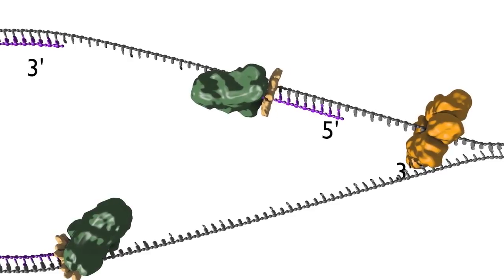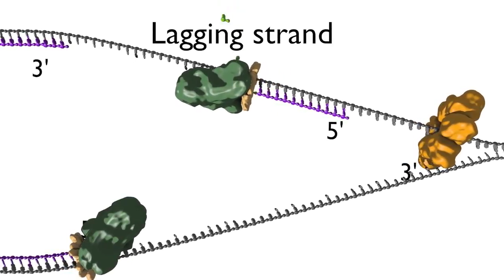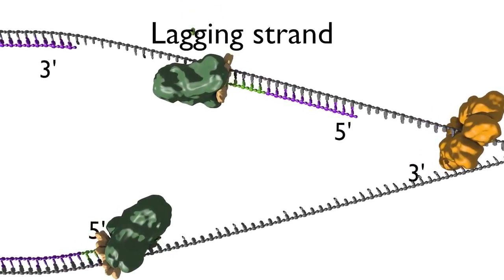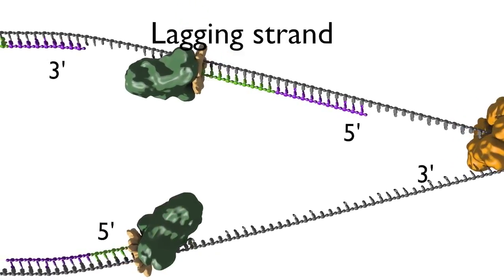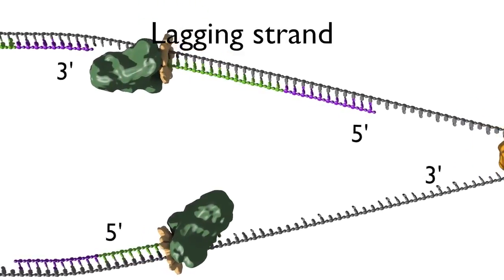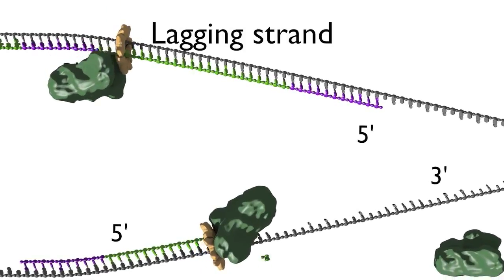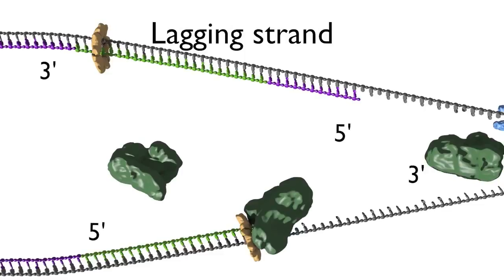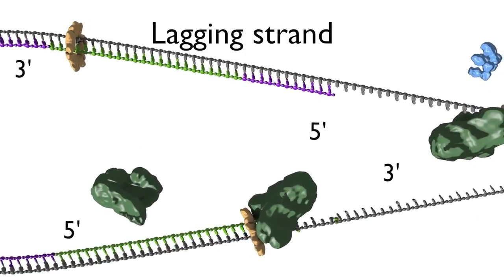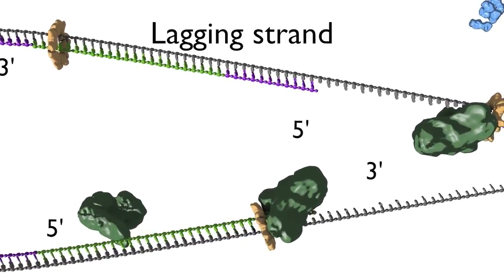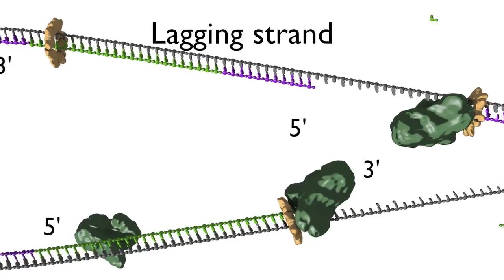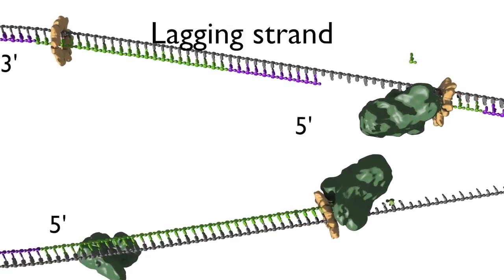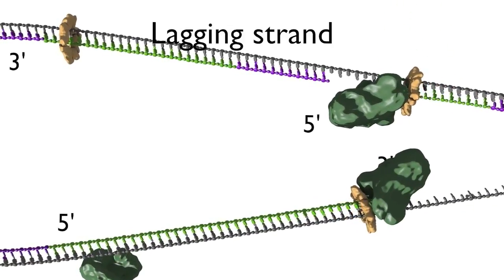The top strand is the lagging strand, on which just a short stretch of DNA is made by the polymerase elongating in the five prime to three prime direction. After synthesizing this short stretch of DNA, the polymerase then dissociates and a new polymerase binds at the fork to elongate the next RNA primer. So, priming and elongation are happening repeatedly on the lagging strand as the replication fork moves along the DNA. Synthesis is discontinuous.